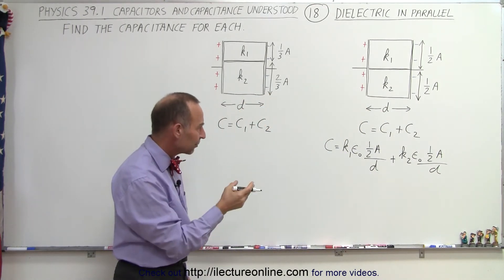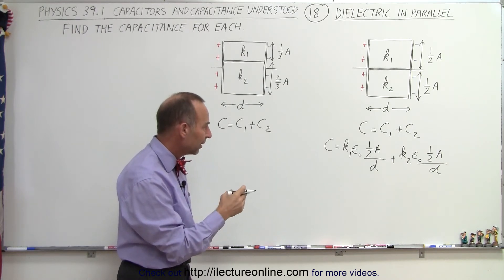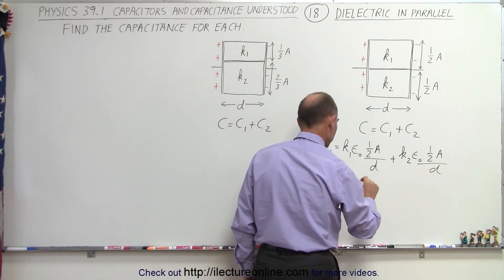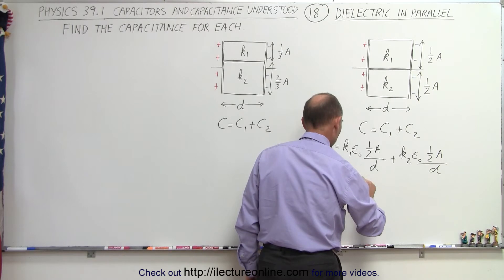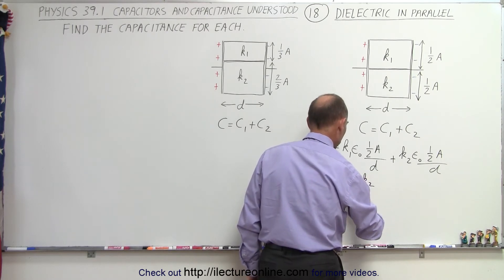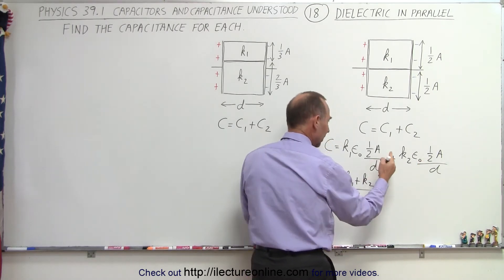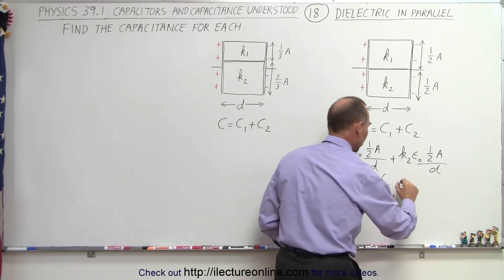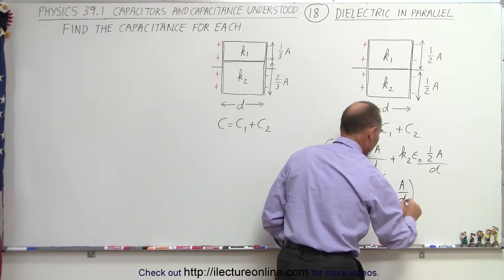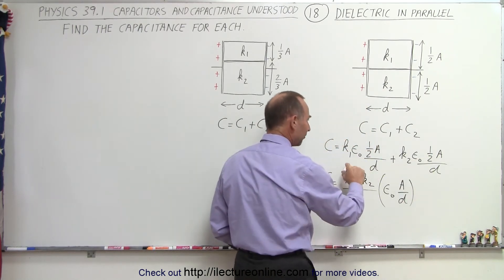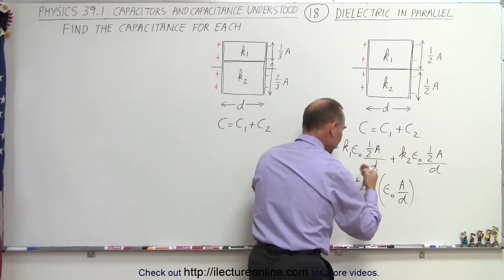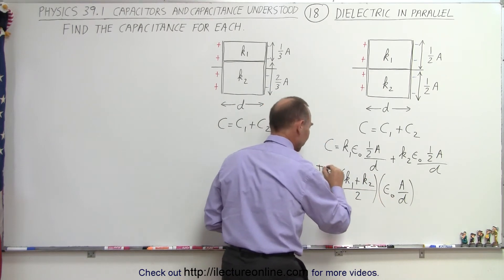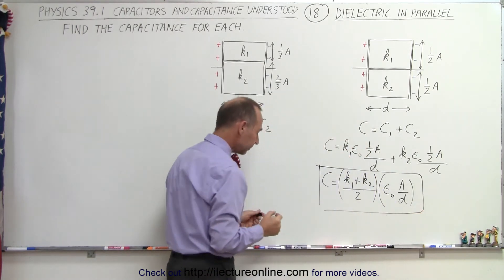Now you can factor out, let's see here, we can factor out a one-half, an epsilon sub naught, an a, and d. So capacitance is equal to k1 plus k2 divided by 2, so I'm factoring out a 2. I'm factoring out everything else, then what I have left is an epsilon sub naught which is common to both, an area which is common to both, and a d which is common to both. I just factored out the one-half and then I left the k1 and k2 alone.